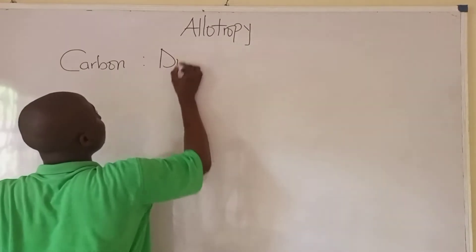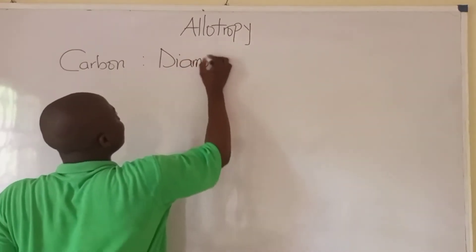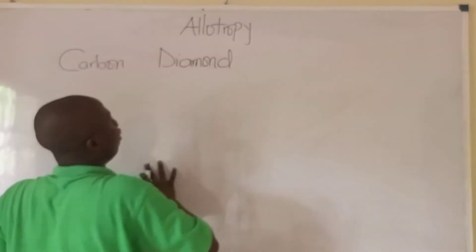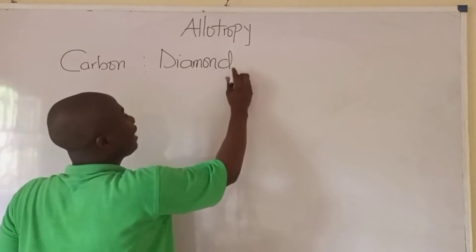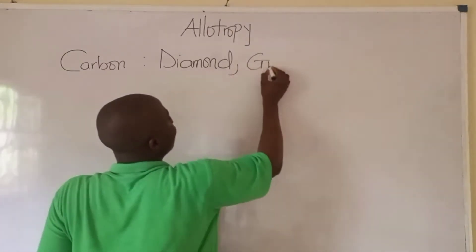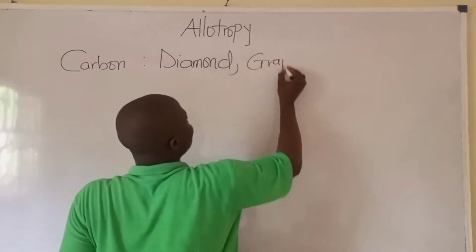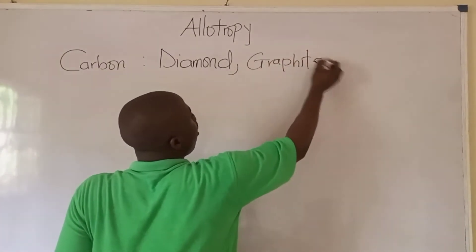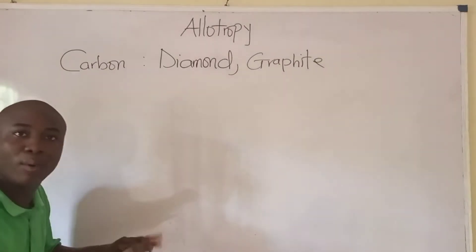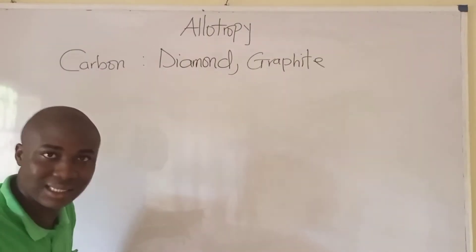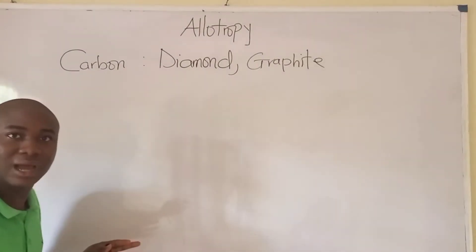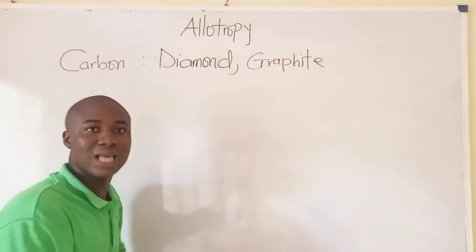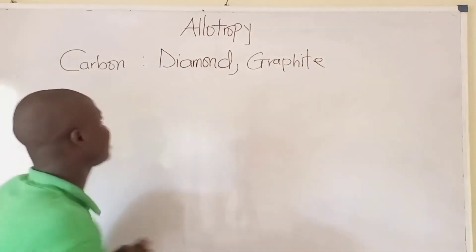The first, or the major, of the allotropes of carbon is diamond. After diamond, we have graphite as another allotropic form of carbon. Carbon exists in different allotropic forms — majorly diamond and graphite.